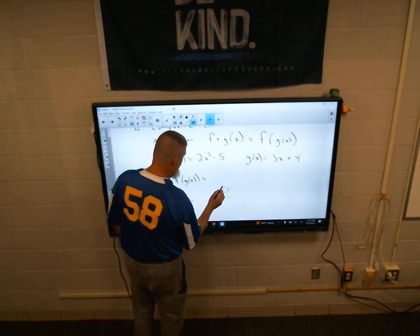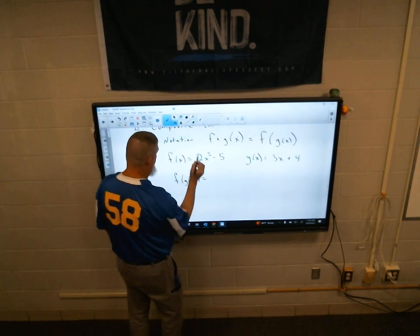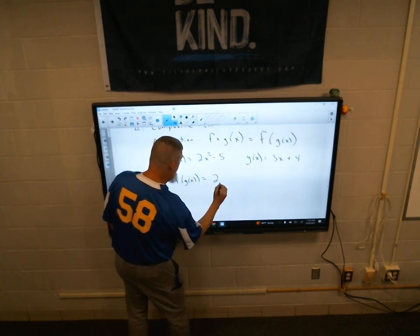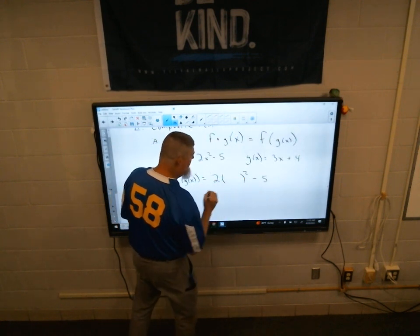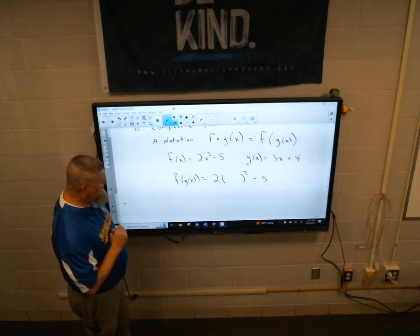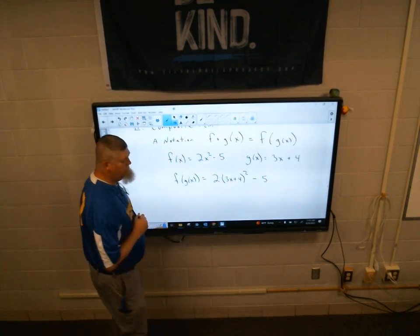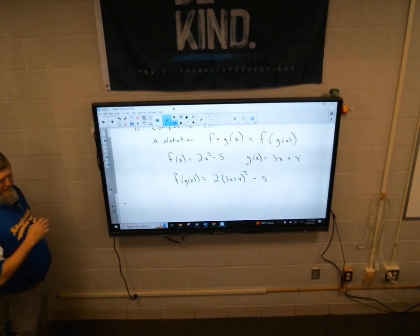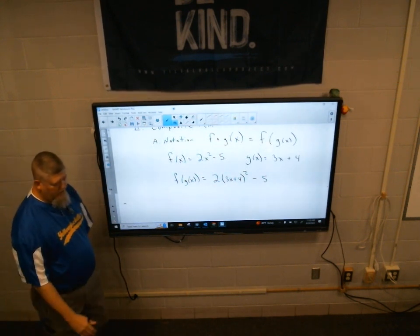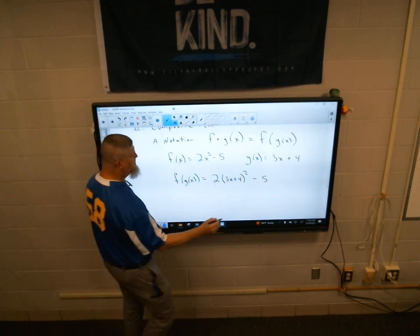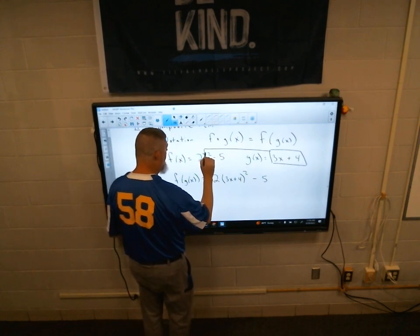So, I'm going to write it as 2x squared minus 5 and then in place of that x I'm going to put 3x plus 4. And then you would evaluate that however you have to. In this case, squaring and distributing and all that other stuff. But this function goes inside the x.